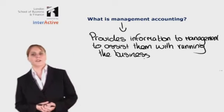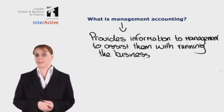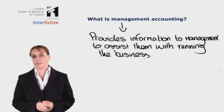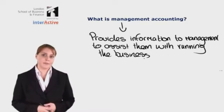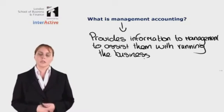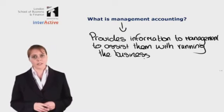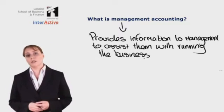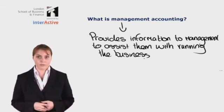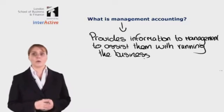What kind of information are we talking about? Well, there's all sorts of information which would be provided to management to help them run the business. So it might be sales information — how many units of our product have we sold in the current month — cost information, how much it's costing us to run the business, and it might also include other information like employee satisfaction surveys and customer satisfaction surveys.